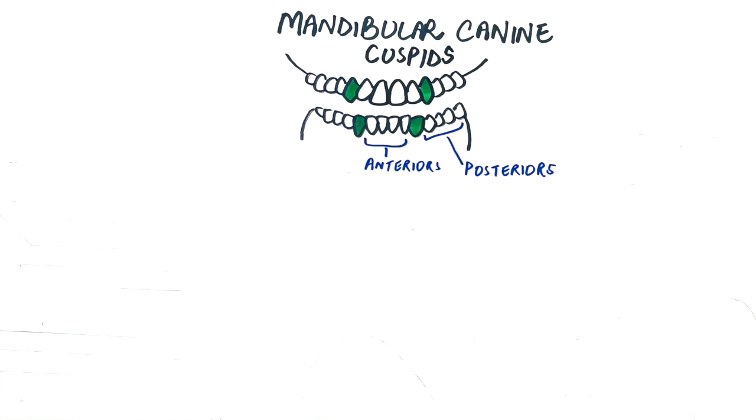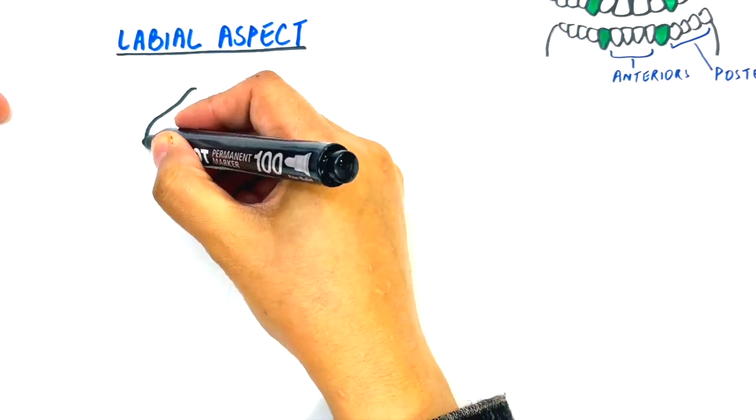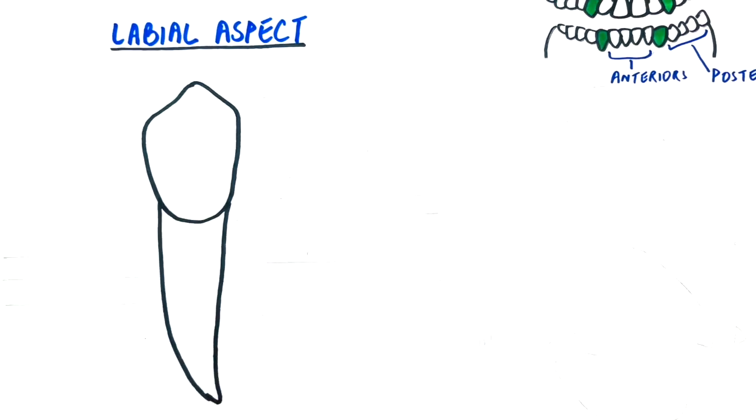Please do watch my video on maxillary canine before proceeding with this video. Let's talk about all five aspects of the mandibular canine in detail. Starting from the labial aspect.